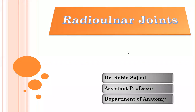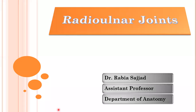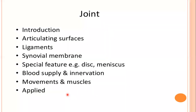My name is Lair Haban Raheem, and today's topic is the radio ulnar joints. We have to study the joint under these headings: in the introduction, we will discuss the joint type and variety, articulating surfaces, ligaments, synovial membrane, where the attachment is, and where the capsular ligaments are.